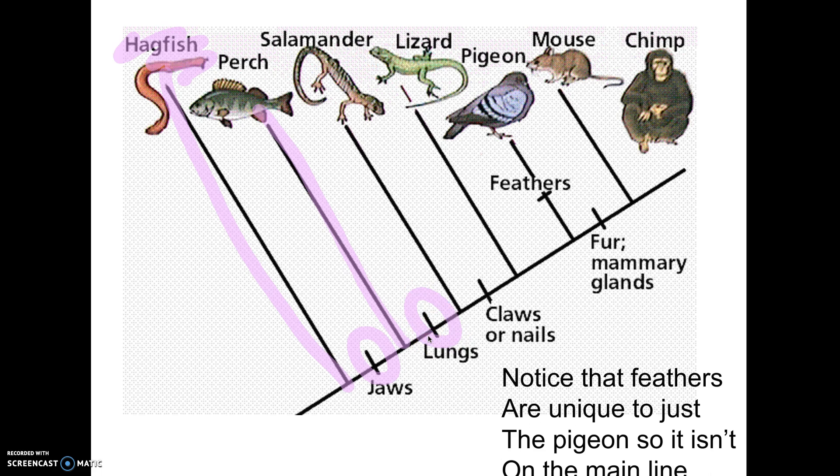Everybody past the bird has fur and mammary glands. Also, a couple of other things. The bird is the only one with feathers. So notice how that trait is not on the main line. That trait is unique to birds. And finally, really important, the mouse and the chimp could be flip-flopped here. There's no reason why the mouse has to be before the chimp. There's nothing distinguishing them. They're equally related to the bird. The mouse is not closer related just because it's listed closer. Since there's no trait separating or distinguishing these, technically, you could put the chimp here and the mouse here.